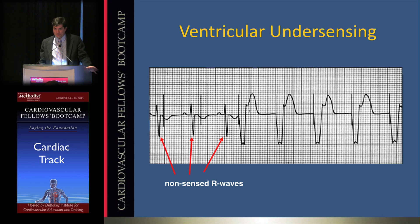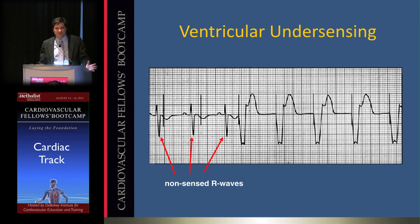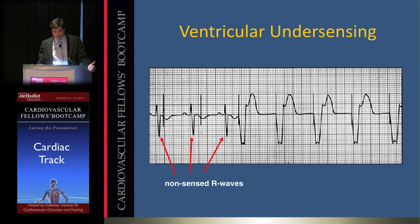Under-sensing is identified when a pacing spike follows a real QRS — the device failed to recognize the intrinsic beat. This should never occur. Common causes are lead dislodgement (a moving lead presents inconsistent signals) and lead insulation failure. When either pattern is seen on a rhythm strip, the pacemaker needs to be interrogated and repaired.